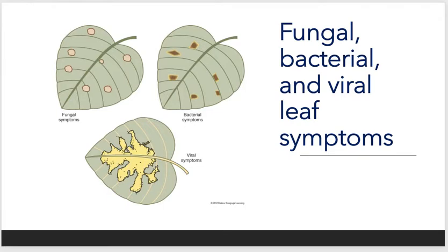Looking at these three pictures of digital leaves: we have fungal symptoms in the top left corner — we see spots on it. We have bacterial symptoms, and if we notice, there's kind of a halo situation going around the actual symptom we're seeing. If we see a viral type problem, typically we see large areas of the leaf become discolored, like you see on that bottom leaf.